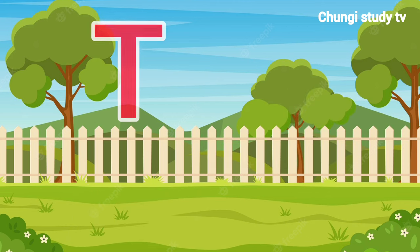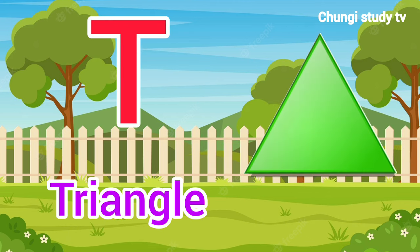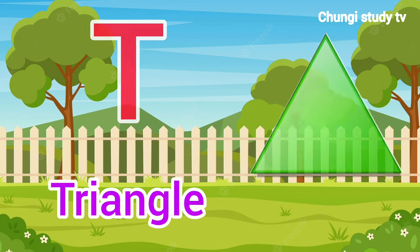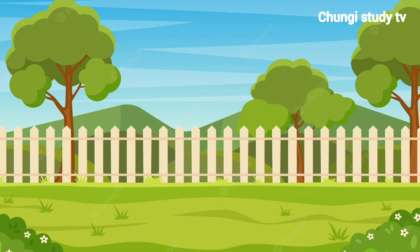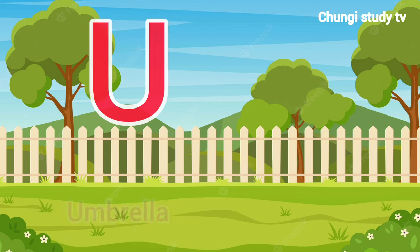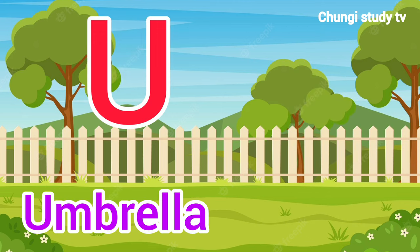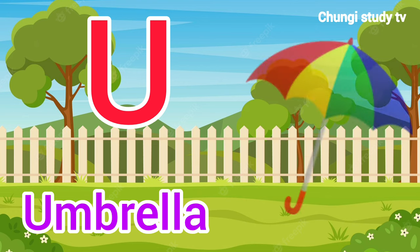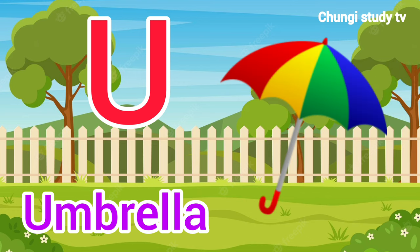T, T for Triangle. Triangle means Trikon. U, U for Umbrella. Umbrella means Chata.